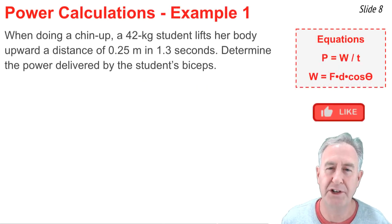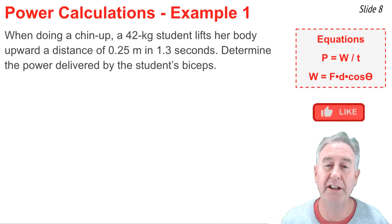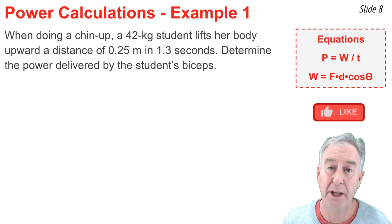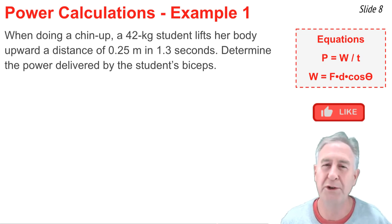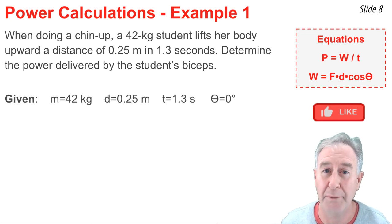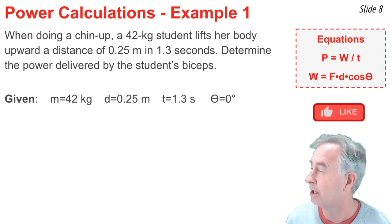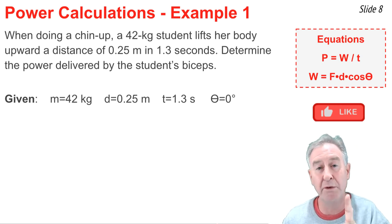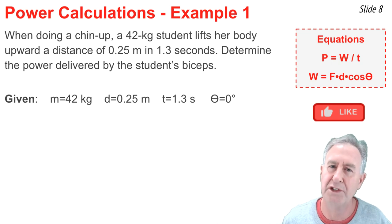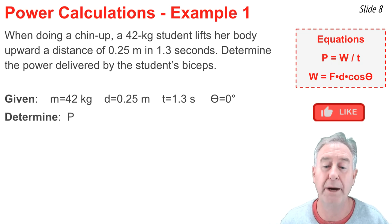It's common in a physics course to have to solve a problem in which you analyze a physical situation to determine the power rating. A problem like this one, about a student doing a chin-up, with a mass of 42 kilograms, lifting yourself upward 0.25 meters in 1.3 seconds. Now, in this case, we're going to begin by listing what we know. We know the mass, the displacement, the time, and since it's an upward force to cause an upward displacement, the angle theta is equal to 0 degrees. I'm looking for the power.